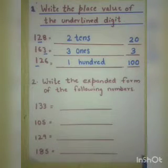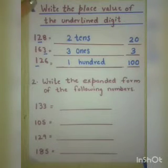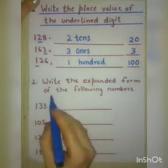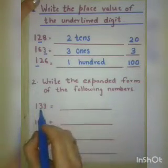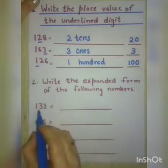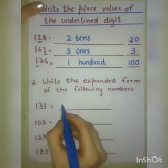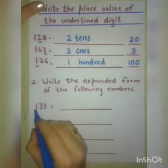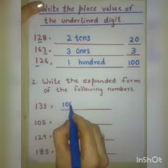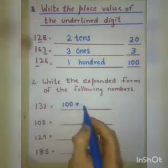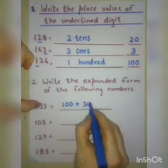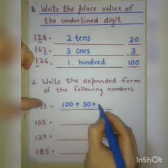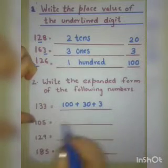Now the next question: we have to write the expanded form of the following numbers. For 133 — 1 is at 100's place so 100, 3 is at 10's place so 30, and 3 at 1's place. Next: 1 is at 100's place so 100, 0 at 10's place so we write 0, and 5 at 1's place.